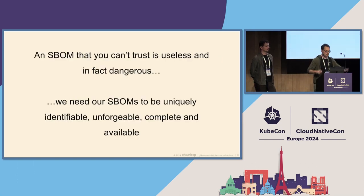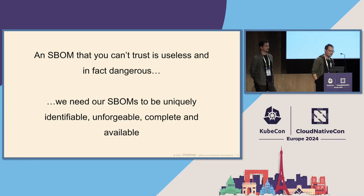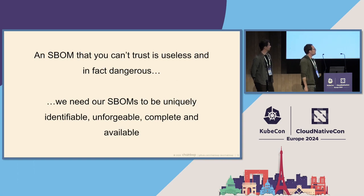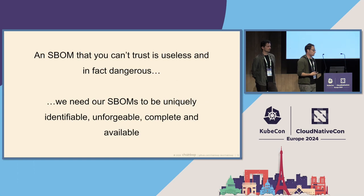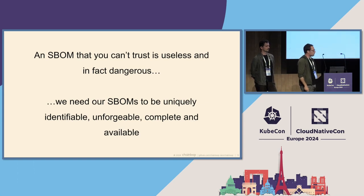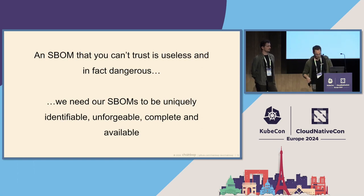I know that this is overly dramatic, but a software bill of materials that you can't trust is useless — and in fact, it should be considered dangerous because you will be making critical decisions out of it. So we need software bills of materials that are uniquely identifiable, unforgeable, complete, and available. I'm going to explain what those properties mean next.